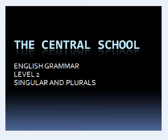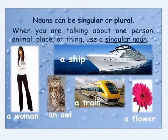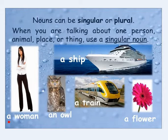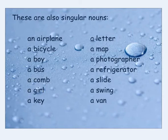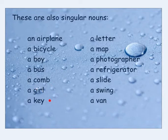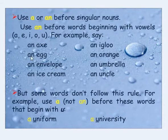Let's move towards singular and plural — what are singulars and what are plurals. A noun can be singular as well as plural. When you are talking about one person, one animal, one place, or one thing, use a singular noun. For example: a woman, an owl, a train, a flower, a ship, an airplane, a letter, a bicycle, a map, a boy, a bus, a refrigerator, a comb, a girl, a key.